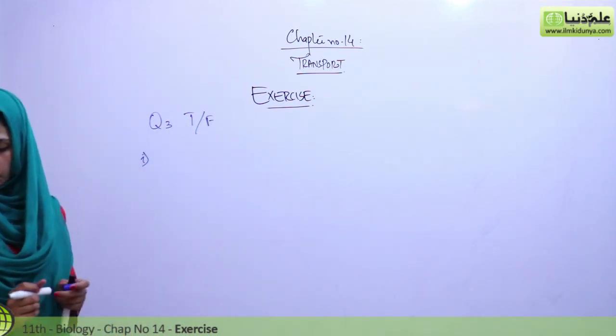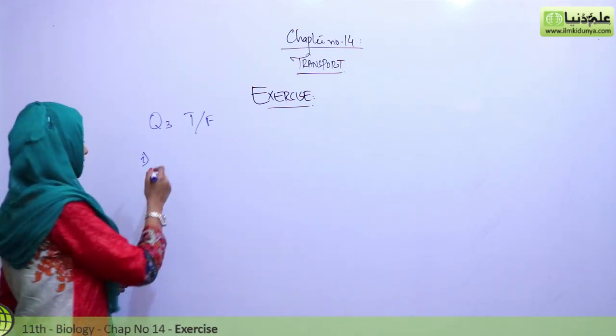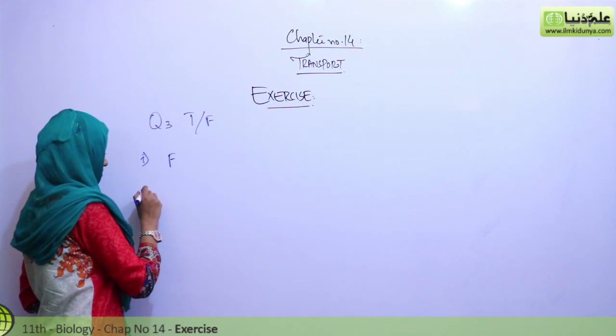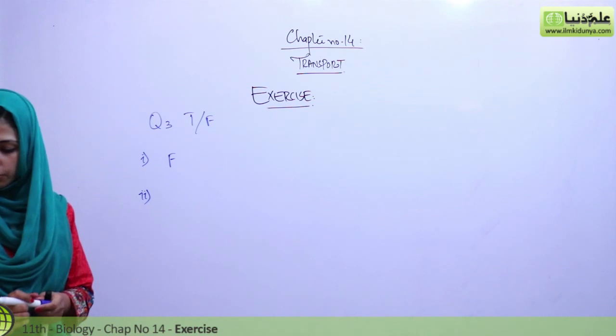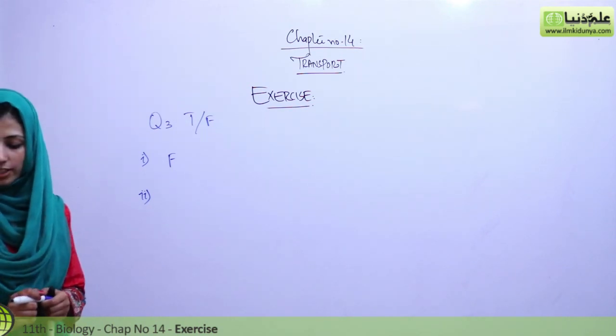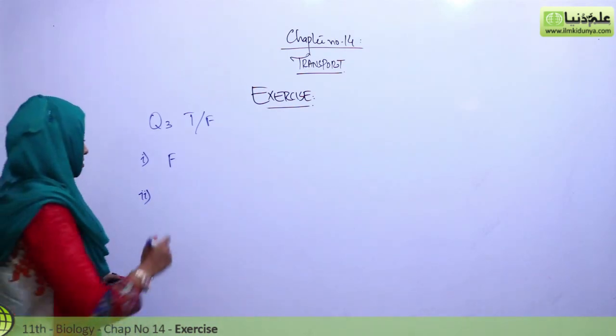First statement is, the intercellular opening in the blood capillaries are larger than the opening in the lymph capillaries. This is false. Second is, between the left auricle and the left ventricle in the human heart, the valve present is called tricuspid valve. It is bicuspid, so this statement is also false.